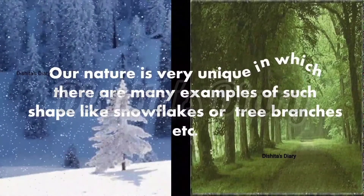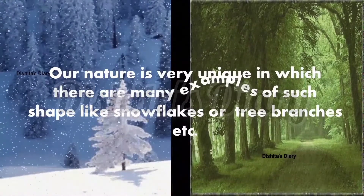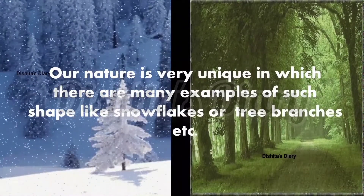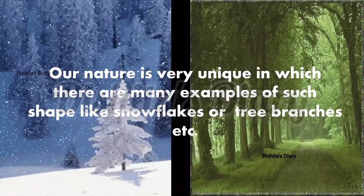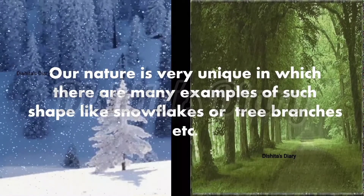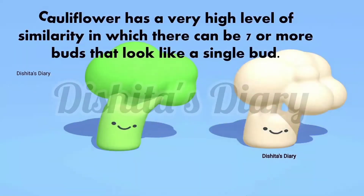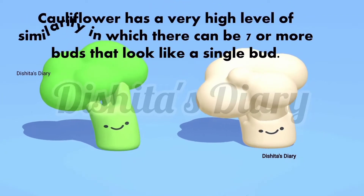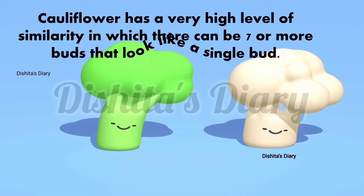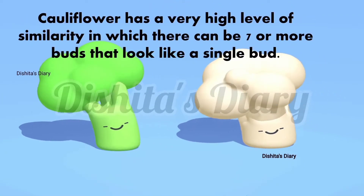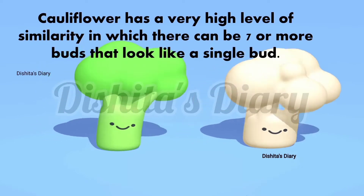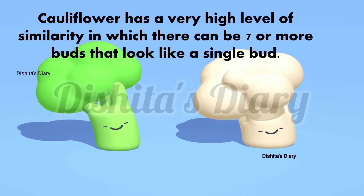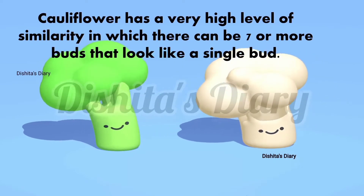Our nature is very unique, and there are many examples of such shapes — like snowflakes or tree branches. Cauliflower has a very high level of similarity, in which there can be seven or more buds that look like a single bud.